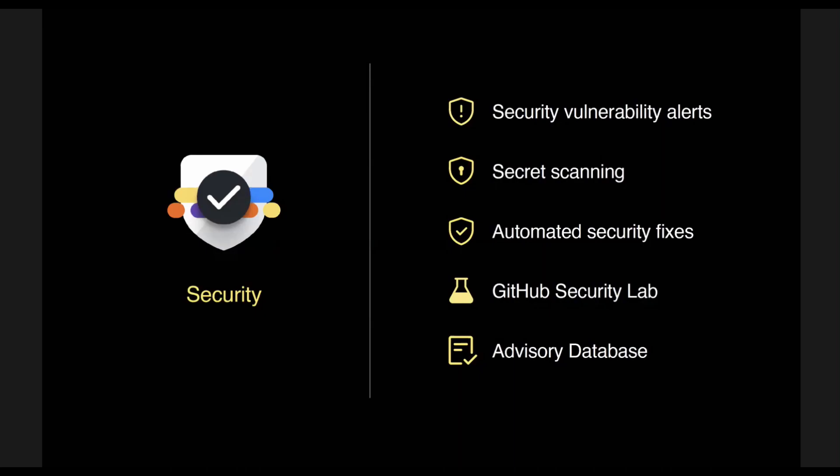The last lab is security. We started our security journey back in 2017 with security vulnerability alerts. From there, we introduced secret scanning — if you have an AWS token in an API that gets leaked, we automatically contact AWS, they can revoke that token, and then we let you know. At last Satellite, we did automated security fixes via the acquisition of Dependabot. We think of Dependabot as the Roomba that keeps your code clean — it goes in and says you need to update these dependencies. And at Universe last year in November, we introduced GitHub Security Lab and the Advisory Database.